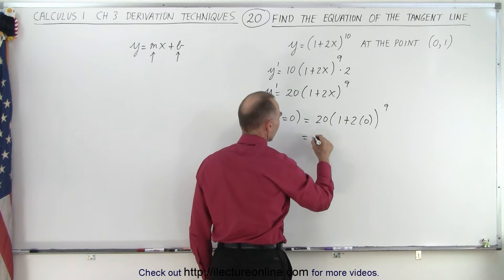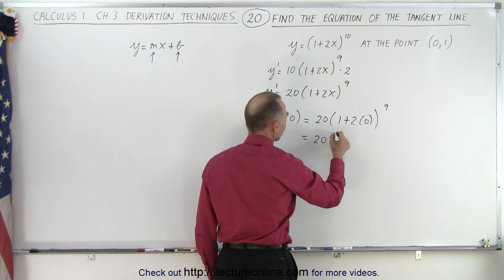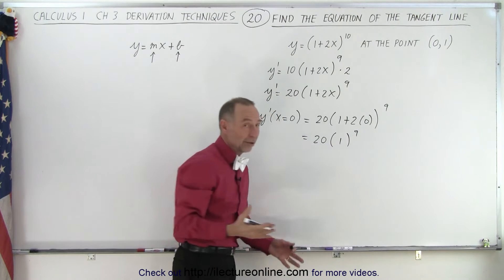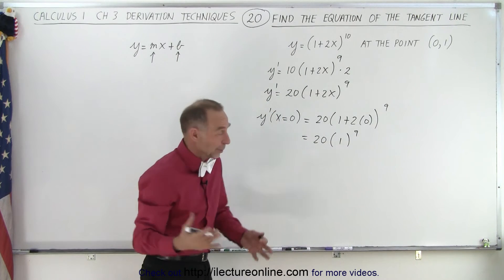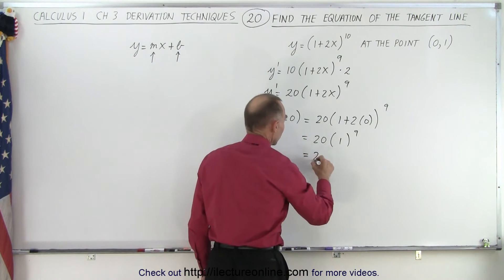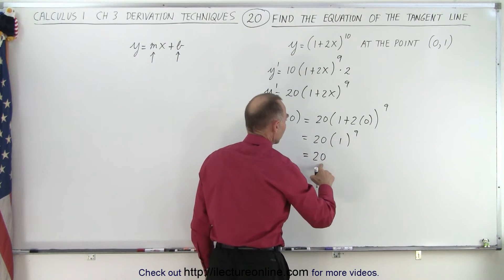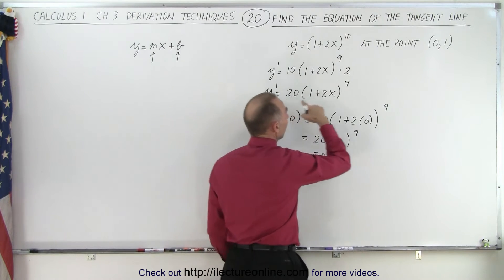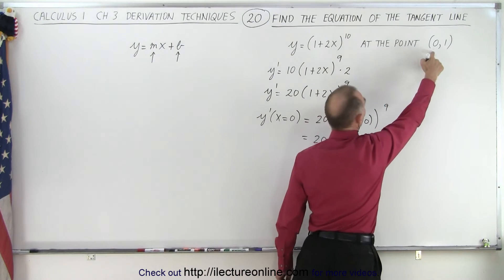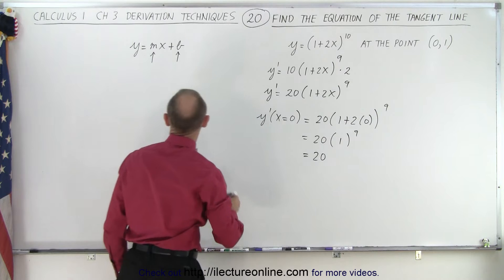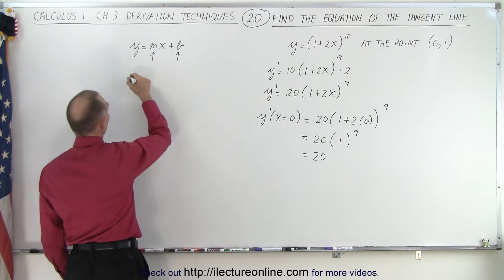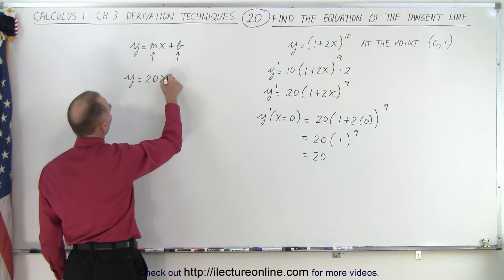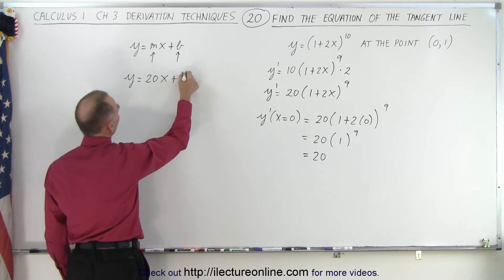This becomes 20 times 1 to the 9th power. Of course, 1 to the 9th power is simply 1, so this equals 20. That means the slope of our function at the point (0, 1) is equal to 20, which means our equation becomes y equals 20x plus b.